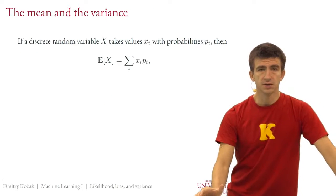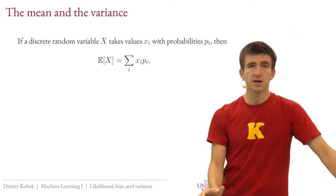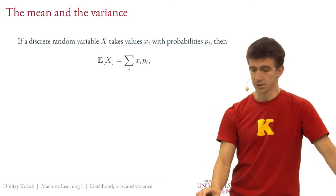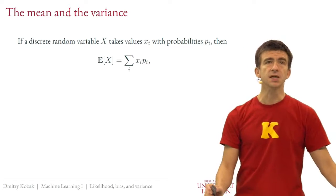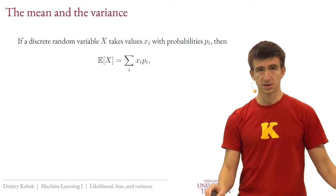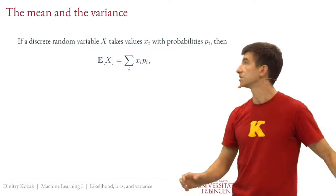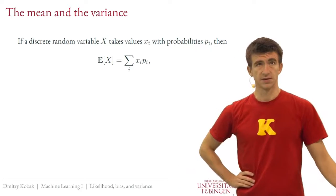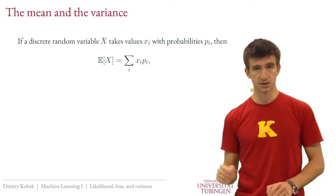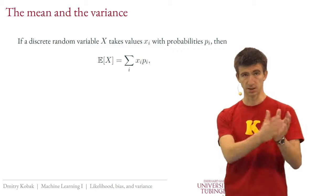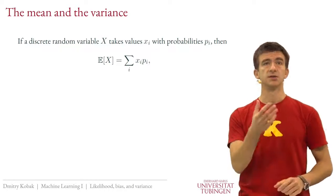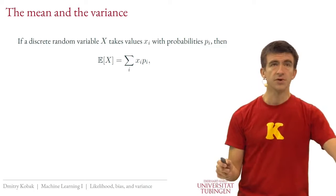Two important things we'll discuss a lot today are the mean, or expected value, and the variance of random variables. For a discrete random variable, the expected value is defined by summing all values weighted by their probabilities. If something has very low probability it doesn't influence the average much; if it has high probability it influences it strongly. It's the mean — a very intuitive concept.